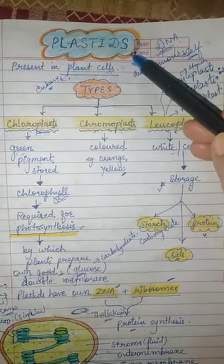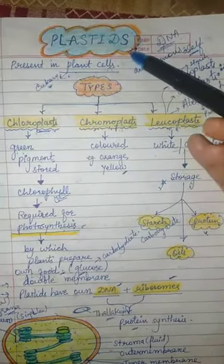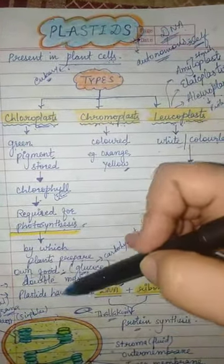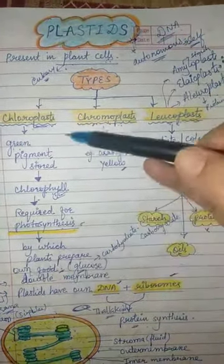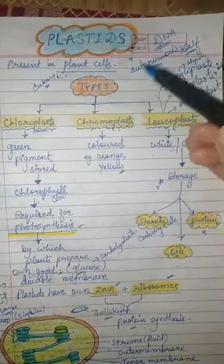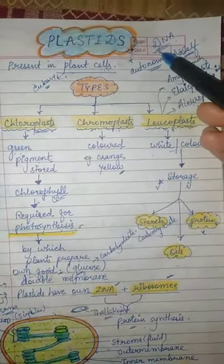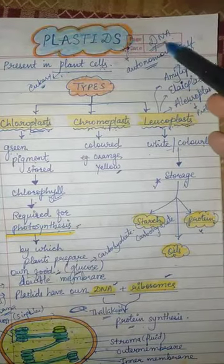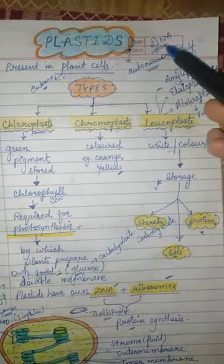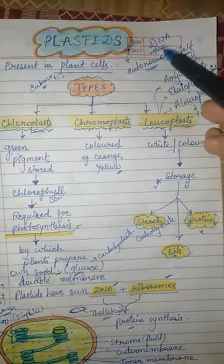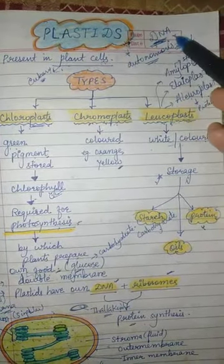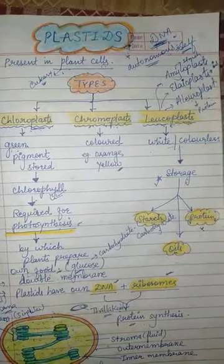Plastids are again double membranous cell organelles — they have an outer membrane and an inner membrane. Like mitochondria, plastids are autonomous cell organelles because they have their own DNA and their own ribosomes, and are capable of synthesizing their own proteins.